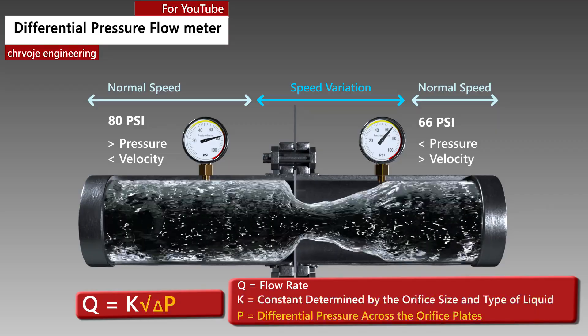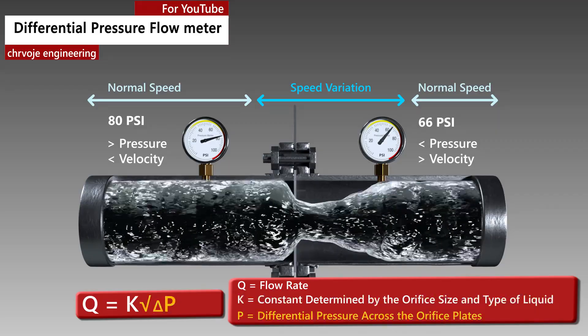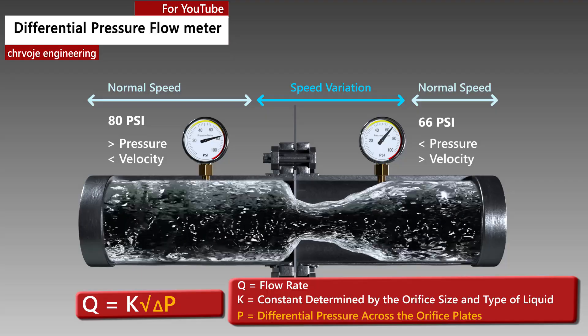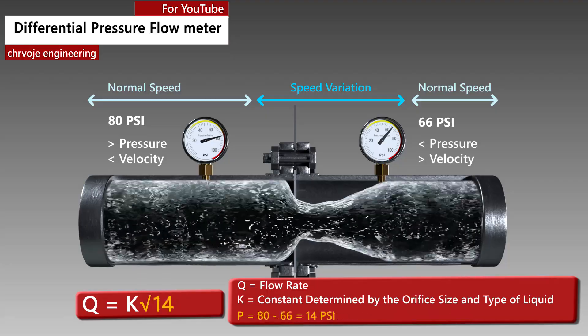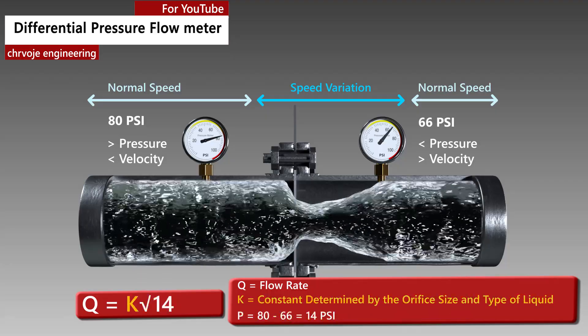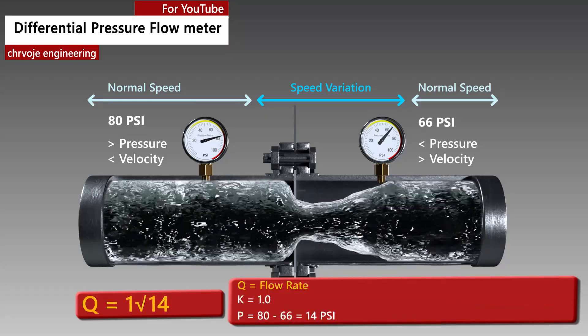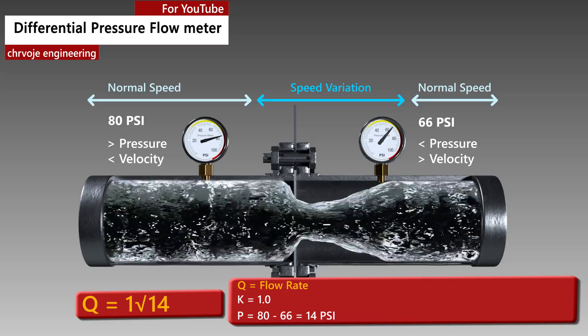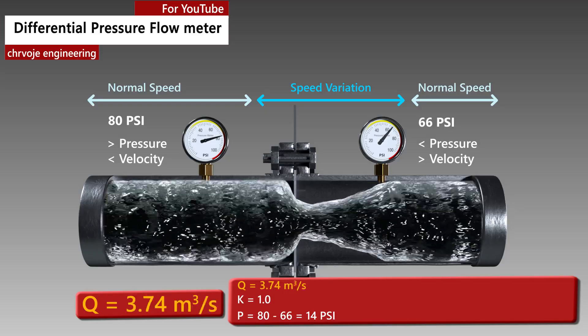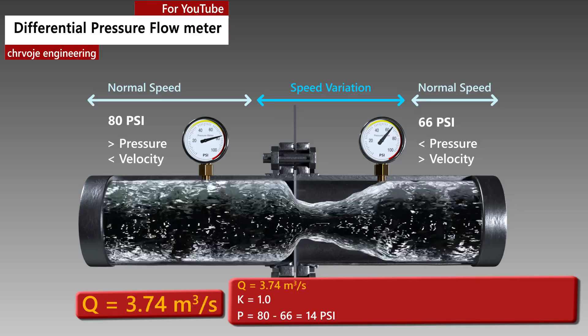For example, if the differential pressure increases by 14 psi with a k factor of 1, the flow rate is increased by 3.74.